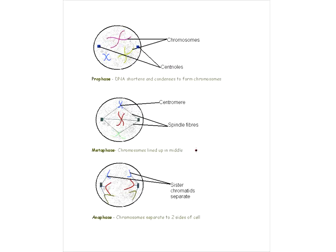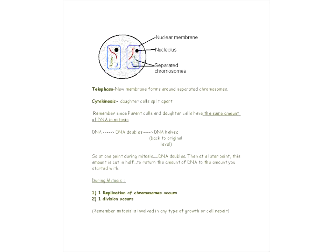In telophase, the new membrane forms around the separated chromosomes. The point where the two cells actually split is cytokinesis. Remember that in mitosis the parent cells and daughter cells have the same amount of DNA. Overall in mitosis: you start off with a certain amount of DNA, it doubles in prophase, but then because you have a cell division the DNA is halved again, so you end up with the original level of DNA.